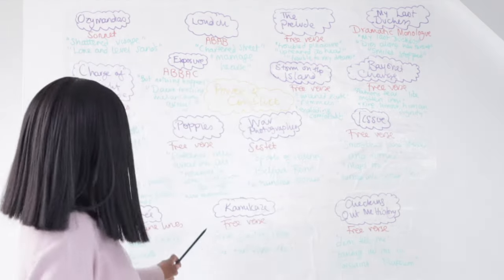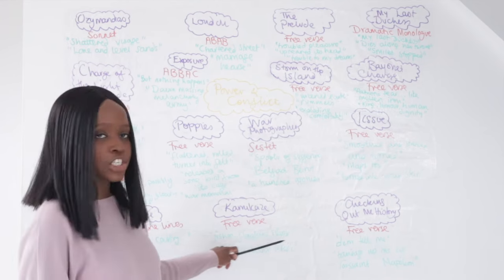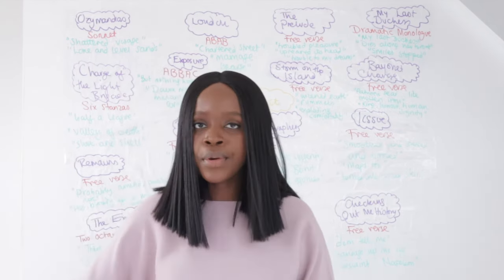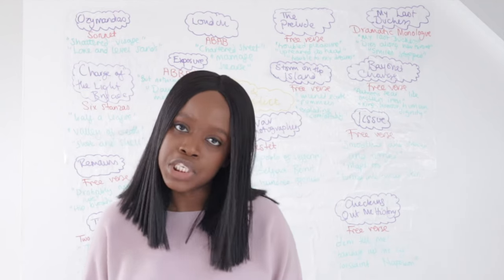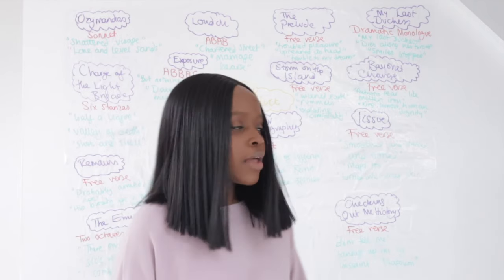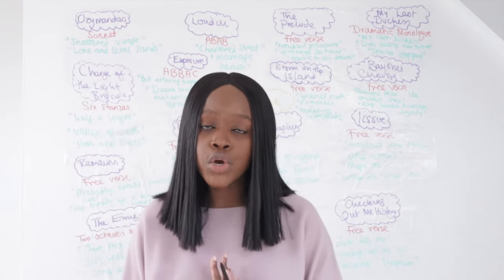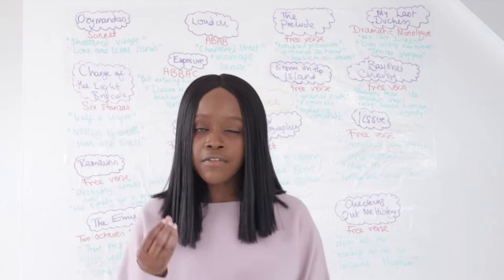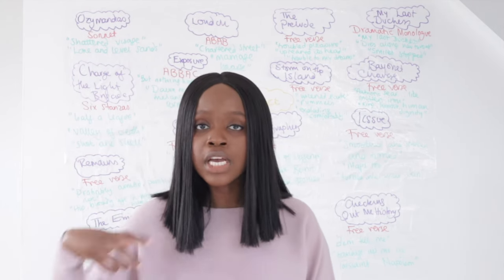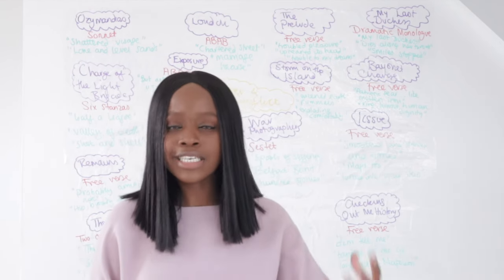The next poem is Kamikaze, written in free verse. The first quotation is 'fishes flashing silver' — the alliteration describes what the pilot on a suicide mission sees from his plane below, making him realise the beauty of nature and causing him to reconsider whether to go through with the mission. The next quotation, 'the turbulent inrush,' reflects the pilot's own turbulent feelings as he weighs his duty to his country against his duty to stay alive and be with his family.